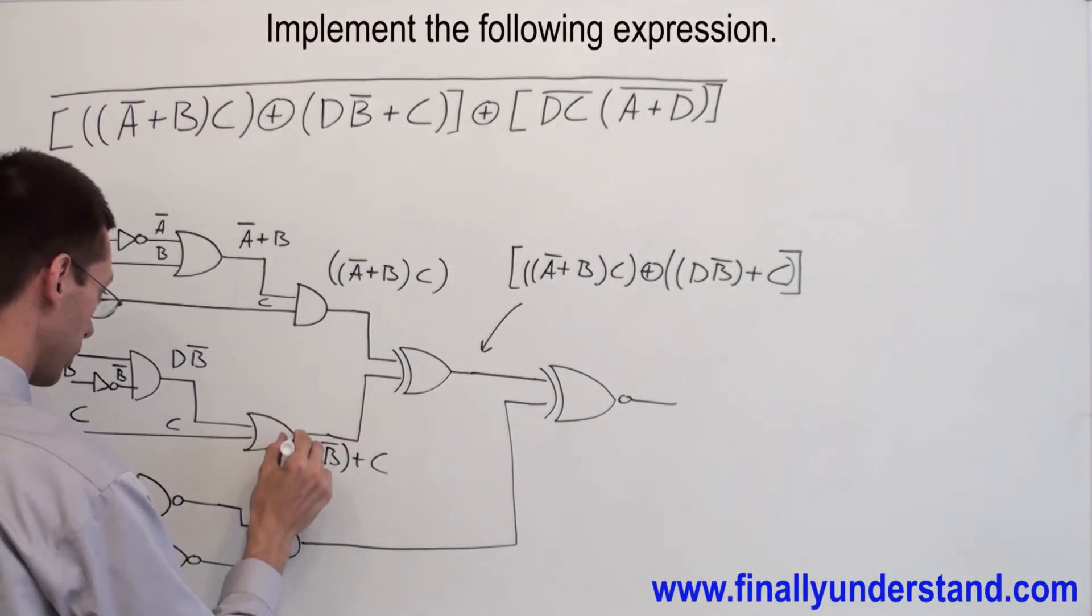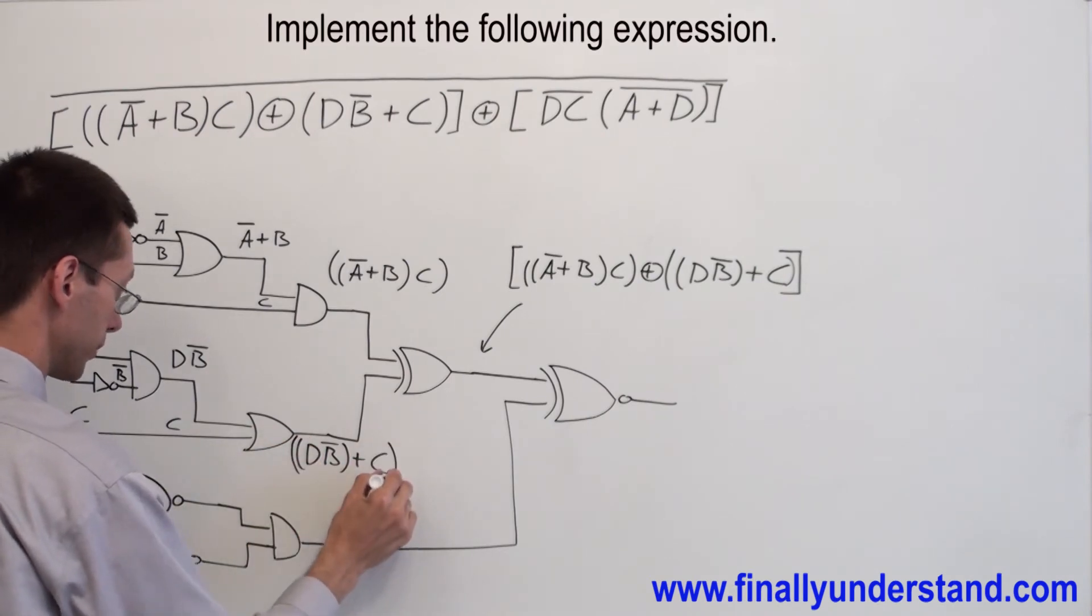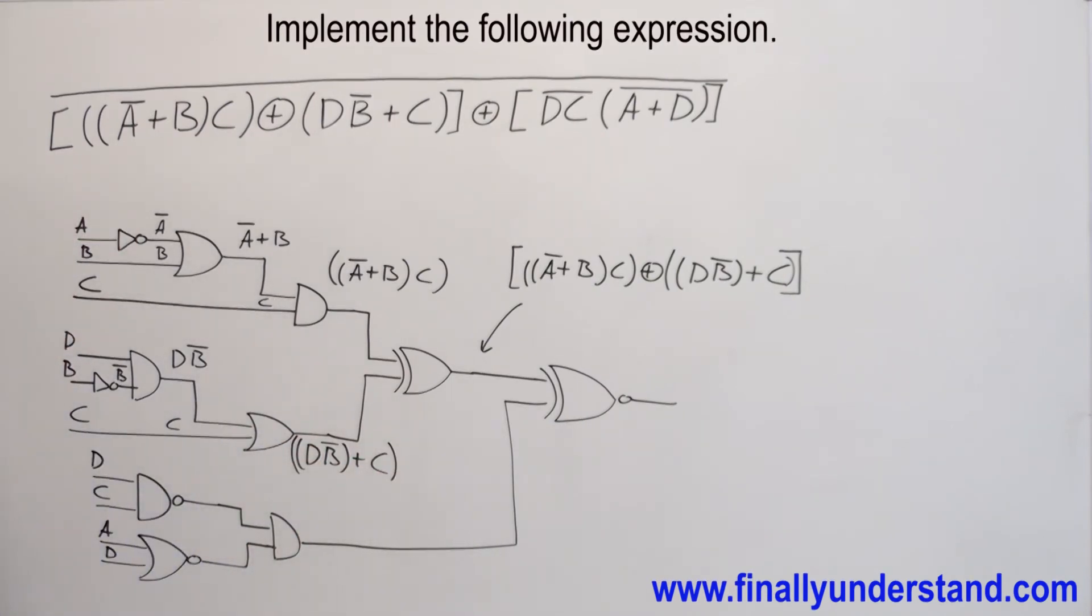Now we can add parenthesis over here to make this simple. Next, let's take a look at the second part of the circuit. I have NAND gate.